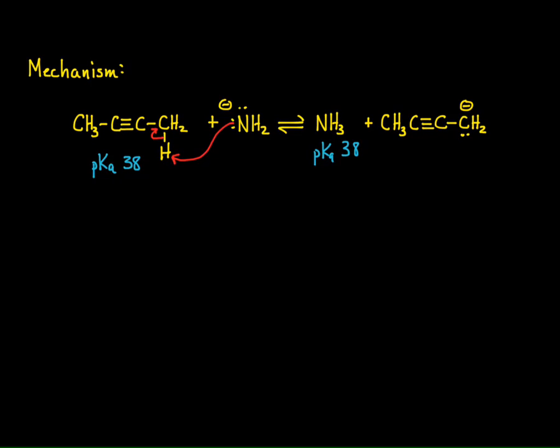This conjugate base, the reason for the acidity of 2-butyne is because we can draw a resonant structure of that conjugate base. Donating a pair of electrons in to form a double bond and taking one of the pi sets of electrons and placing it on the carbon as shown. And the resulting structure looks like this.